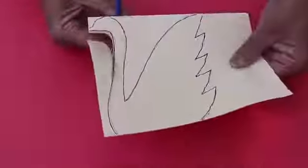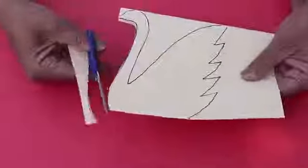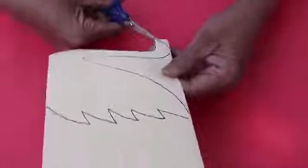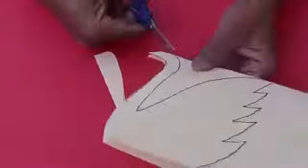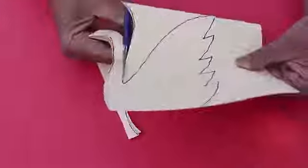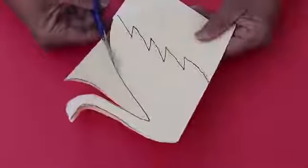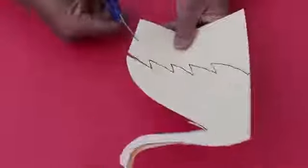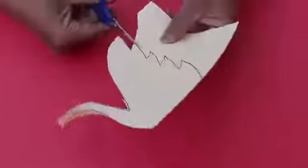Then cut the swan along the outline. Leave the top of the head uncut. This way both layers of the swan will be together and they will be aligned.